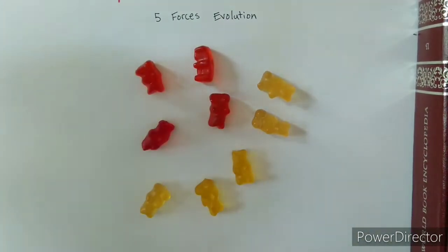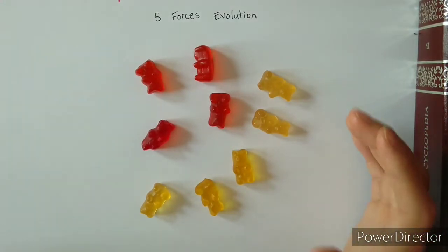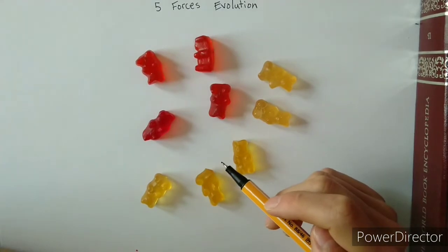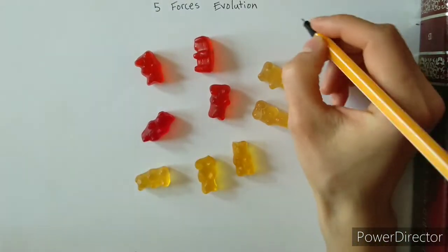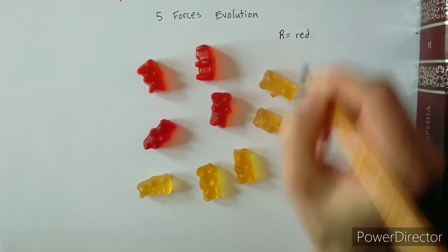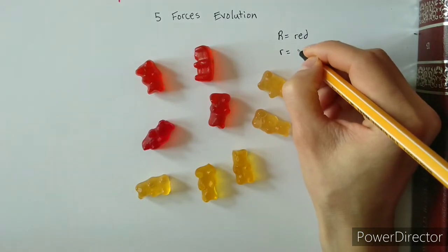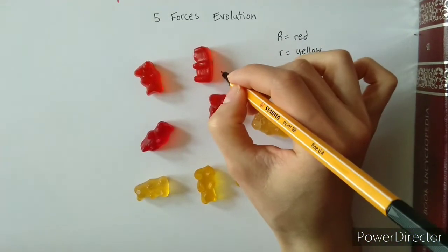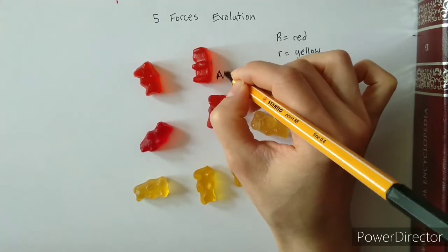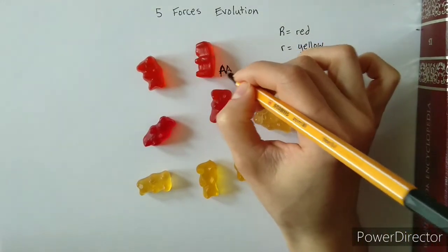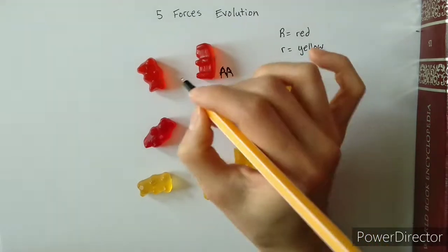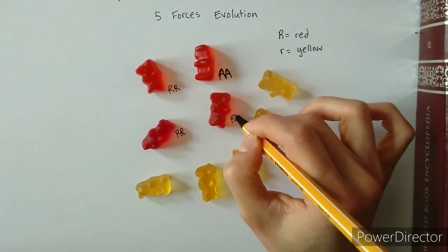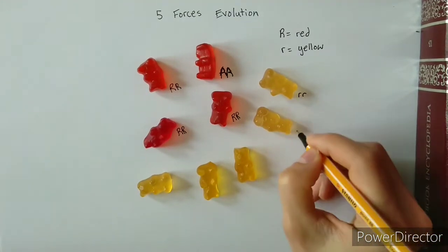We can see clearly that these gummy bears are the same size, but the one defining phenotypic difference between them is their color — red versus yellow. We know that genes determine physical characteristics, so the dominant gene big R gives a red coat, whereas little r gives a yellow coat. Looking at the population, I have individuals who are homozygous dominant for big R, and so on. Each individual has two copies of the gene for fur color — one from mom and one from dad.